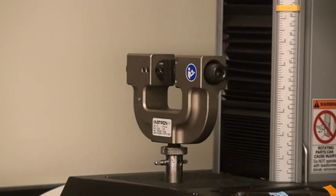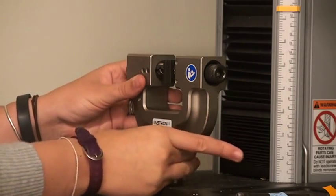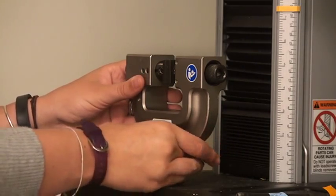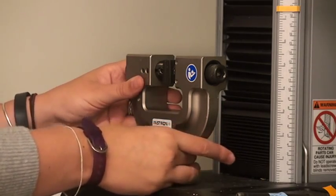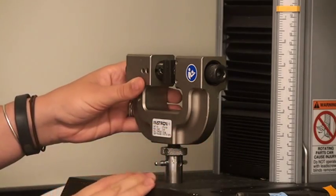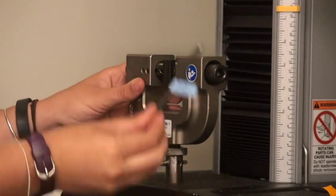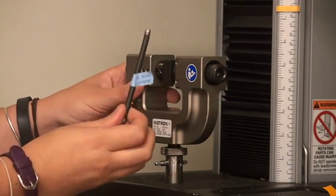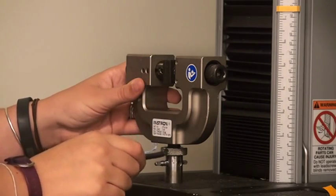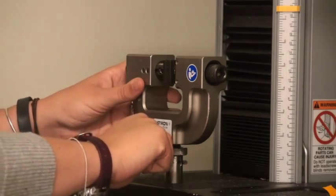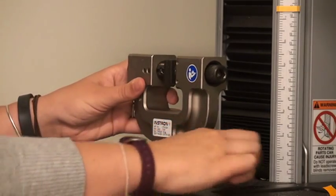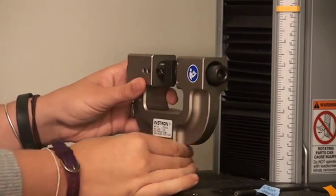To remove the screw action grips, loosen the lock nut on the lower grip by unscrewing it in the counterclockwise direction so that it moves away from the lower collet. If the lock nut is very tight, you can use the lock nut tightening tool to help you unscrew it. Insert the tool into one of the holes on the lock nut and unscrew until the lock nut is flush against the bottom face of the grip.